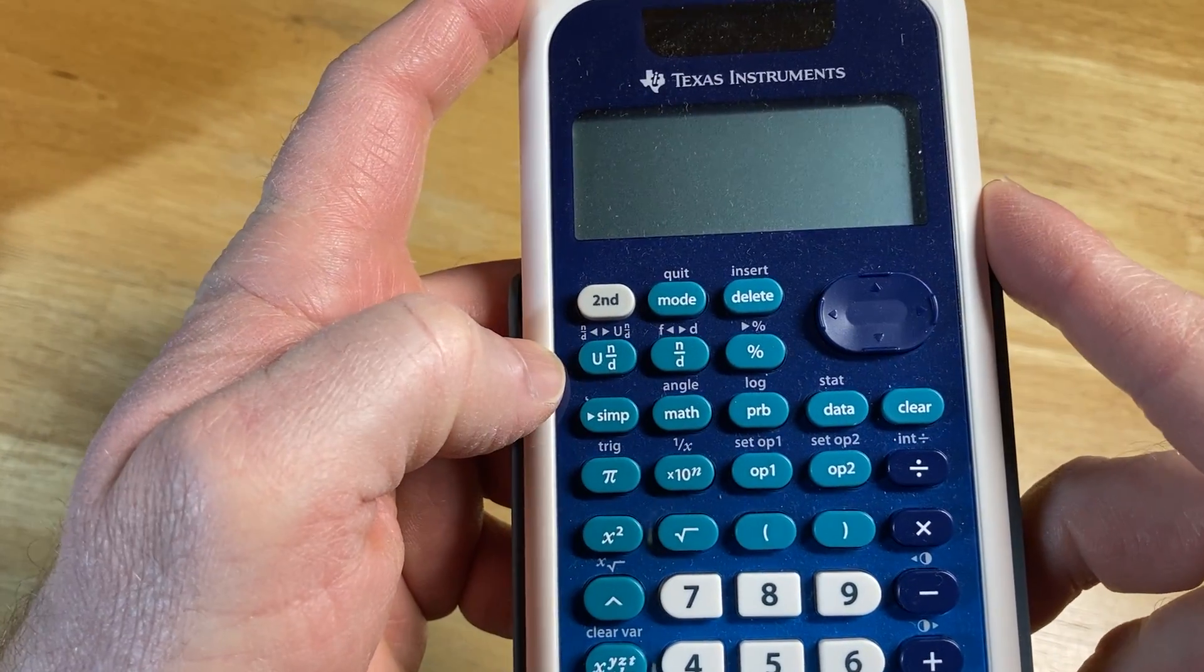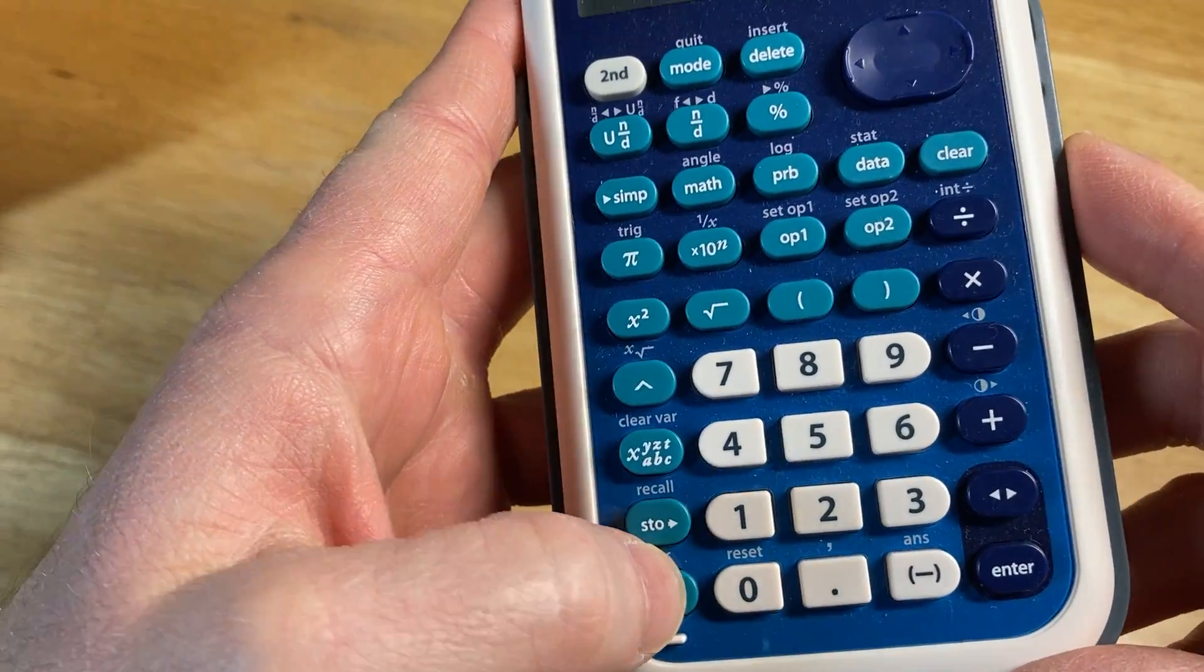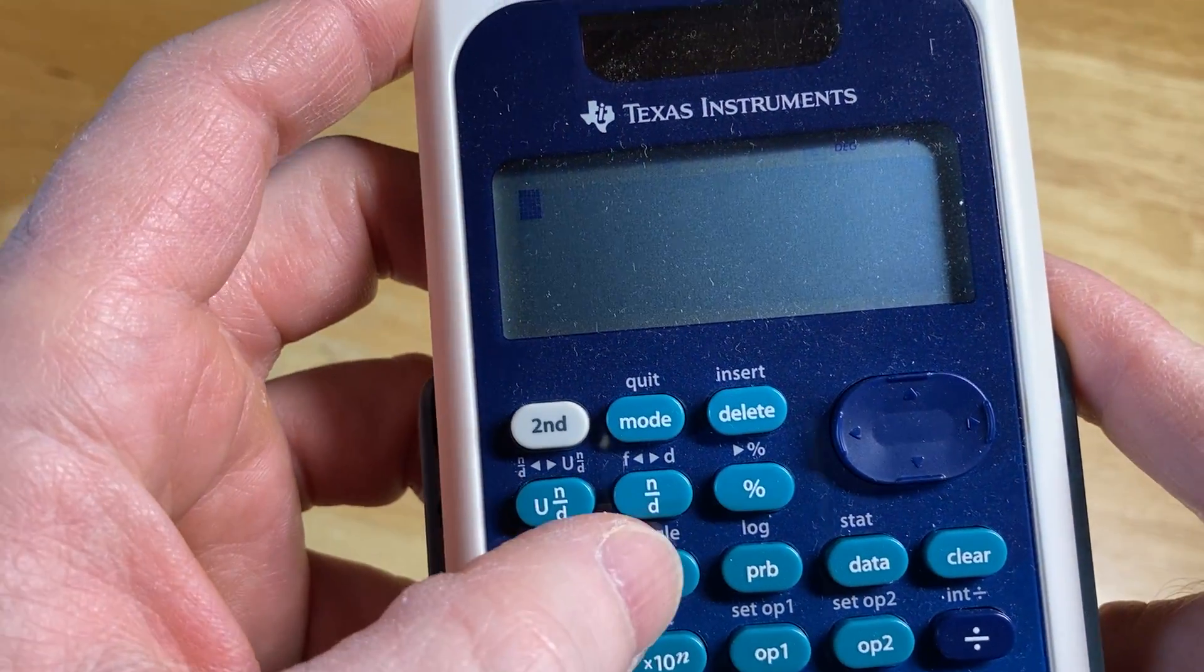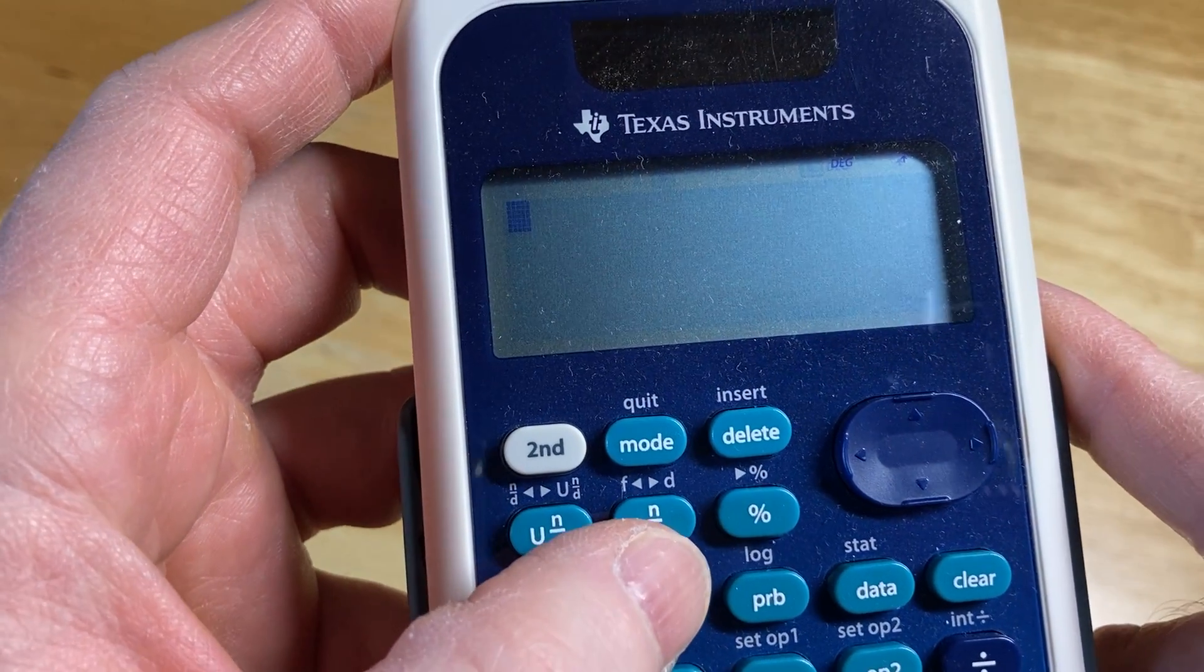So the first thing you want to do is turn it on, so I'm going to press the on button, and now it's on. And the menu we want to access is right here, it's math, so I'm going to press math.